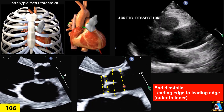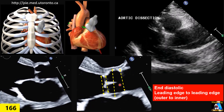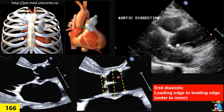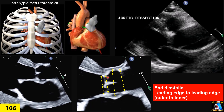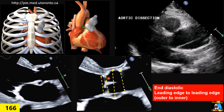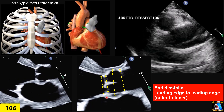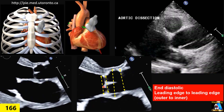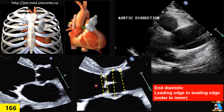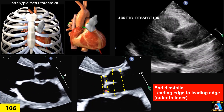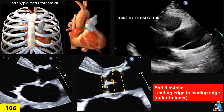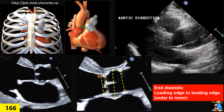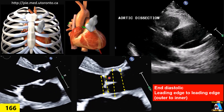We measure those diameters outer to inner, but the surgical ring and echocardiographic annulus will be measured inner to inner. You can check that clip — I explained exactly how.